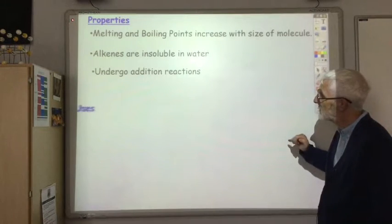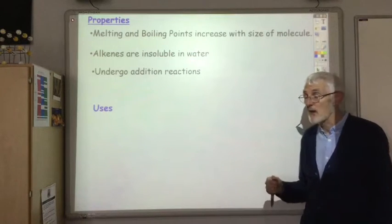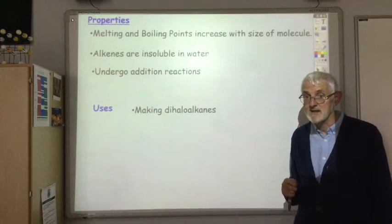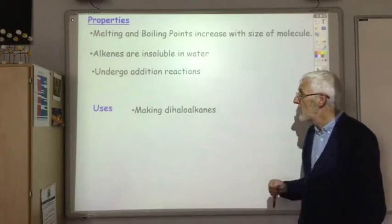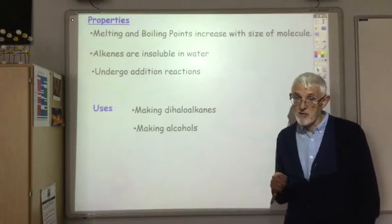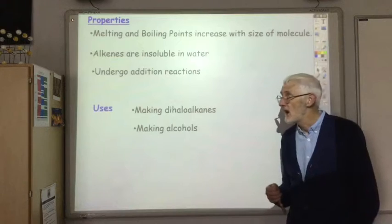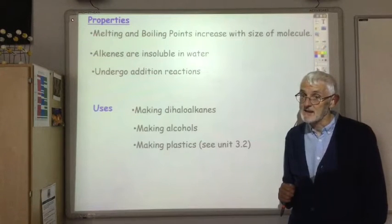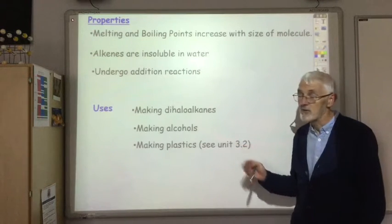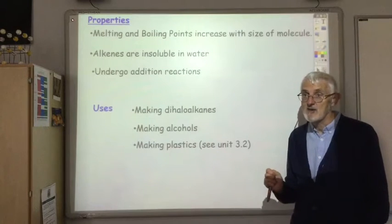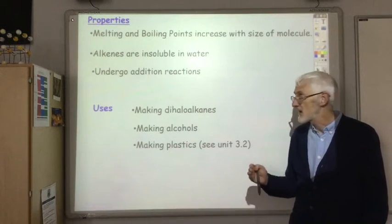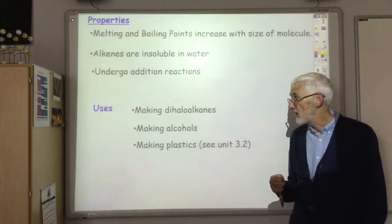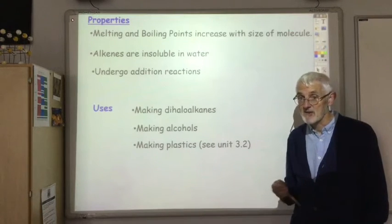Undergoing addition reactions gives rise to a lot of their properties and uses. We use them to make dihaloalkanes through addition reactions with a halogen. We use them to make alcohols through addition reactions with water. And we use them extensively to make plastics. This is a really important use of alkenes. It is an addition reaction - we haven't talked about it because we'll cover this later on in Unit 3, looking in more detail at making plastics through addition reactions of alkenes.